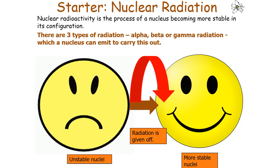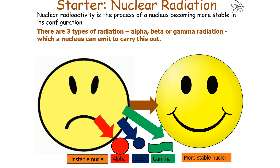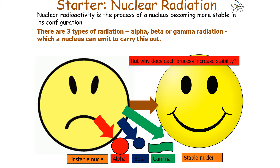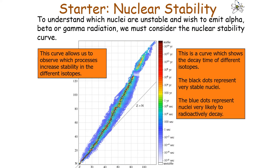Nuclear radioactivity is the process of a nucleus becoming more stable in its configuration. There are three types of radiation — alpha, beta and gamma — which when emitted can turn an unstable nucleus into a more stable one. To understand which nuclei are unstable and wish to emit these radiations, we must consider the nuclear stability curve, which shows which processes increase stability in different isotopes.